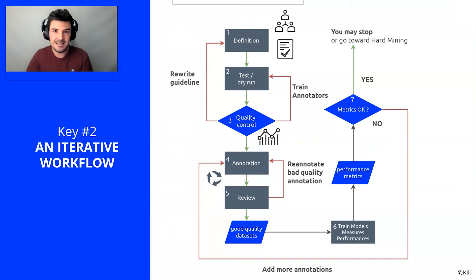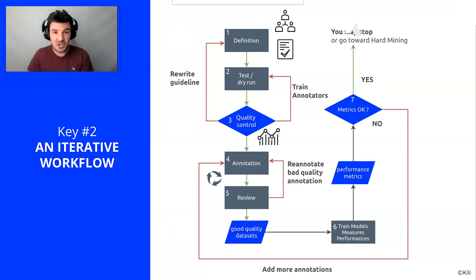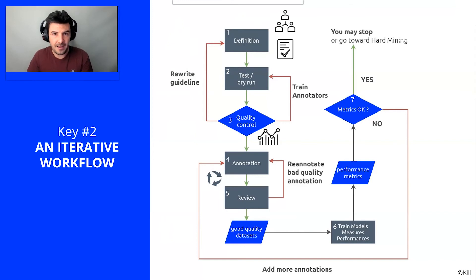We immediately test these annotation guidelines by going into a dry run — we inject images onto the platform and test our guidelines by annotating them. While testing, we'll realize there are problems: object classes we hadn't seen at first, edge cases that are poorly explained or misunderstood, annotation scenarios we hadn't anticipated, etc. So we'll go back to definition, rewrite our guidelines to improve them, and go back to dry run. We repeat this cycle two or three times; it can take up to two weeks, but the pre-project is a step we have standardized in all our projects because it is key to the success of the rest of the annotation project.